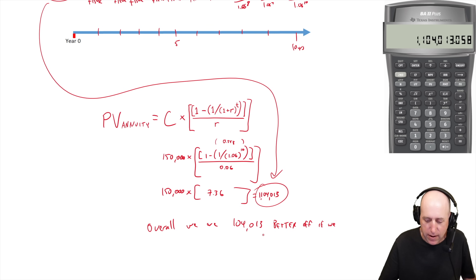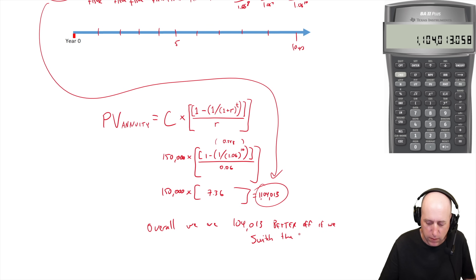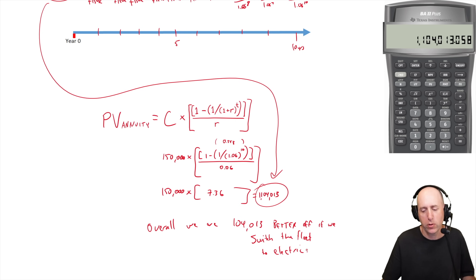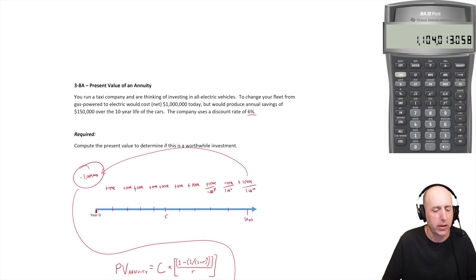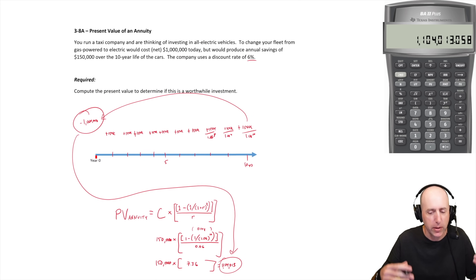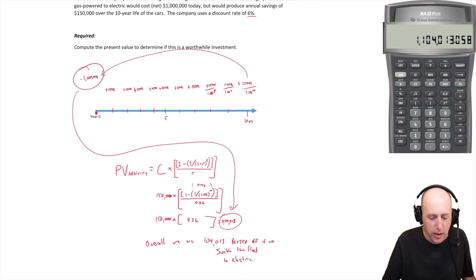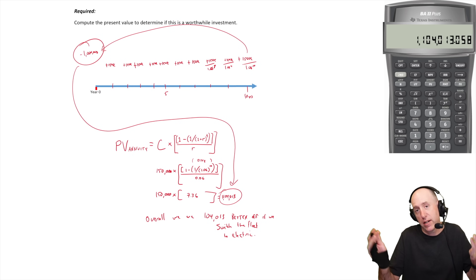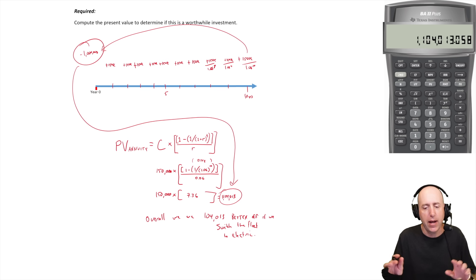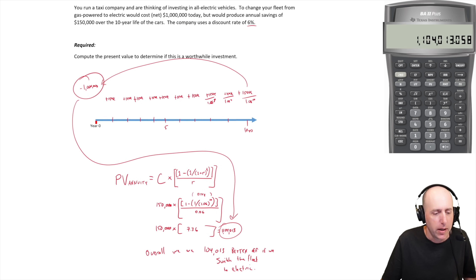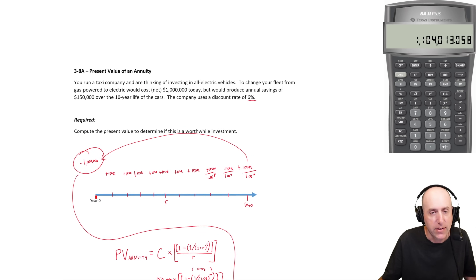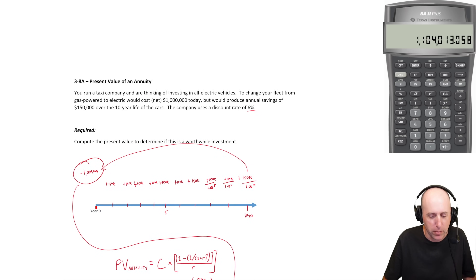Overall we are $104,013 better off if we switch the fleet to electric. There could be many other factors we're not considering, but just based on these projections we should do it. You actually see lots of taxi cab companies have done exactly that — they likely did similar math and found it saves them money.